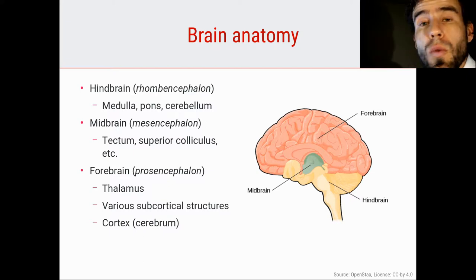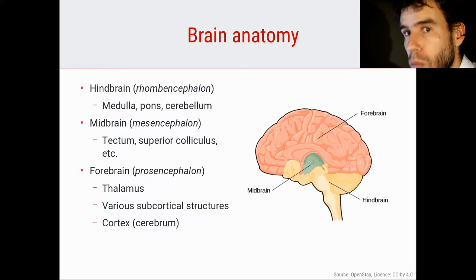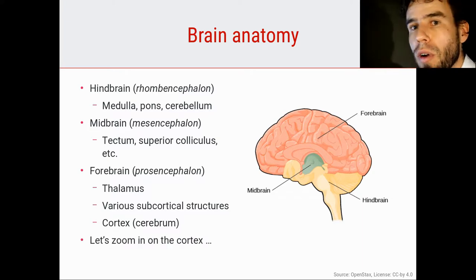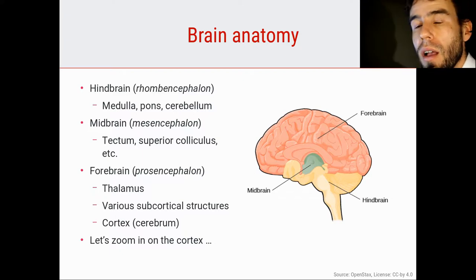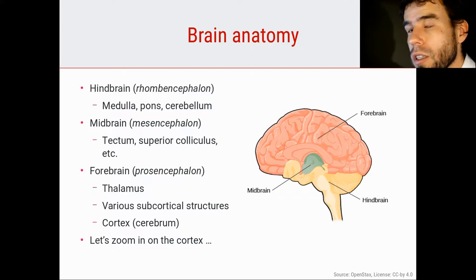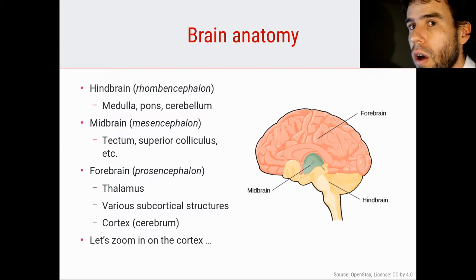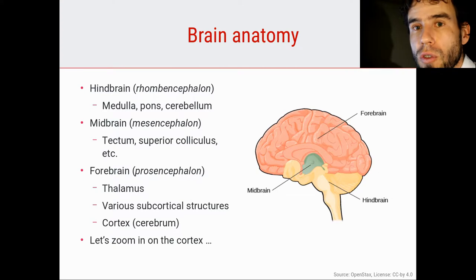The cortex is what we're going to talk about most in this course. It is where most of our cognitive, high-level brain processing occurs — which is not to say that the other parts of the brain are not important; they most certainly are — but much of what we'll discuss will have to do with the cortex.